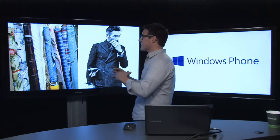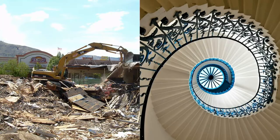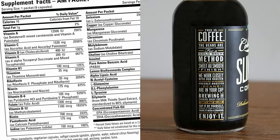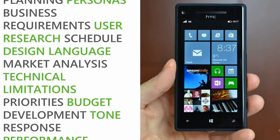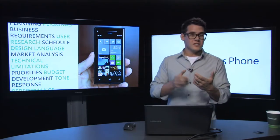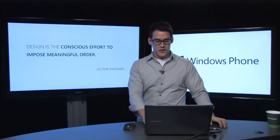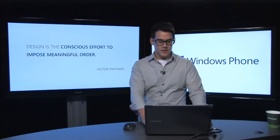This is the job for many different designers in many different roles. For a stylist, it may be taking different materials and putting them in order so the design feels simple and beautiful. For an architect it may be using building materials. For a graphic designer it may be a menu or supplemental facts. For us on a Windows Phone design, it was more than just putting a calendar, map, clock, and books together on a device. When working on a mobile app, you're thinking about business requirements, research, schedule, design language, market analysis, and technical limitations. If you can take all of those and put them in an order that feels simple — design is the conscious effort to impose meaningful order.